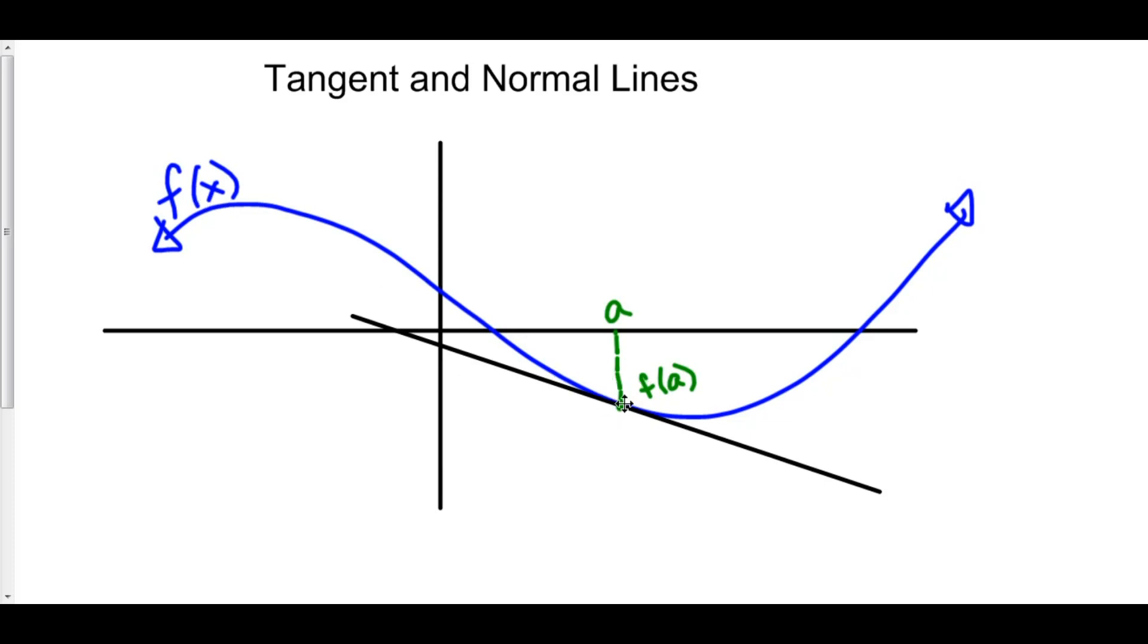The other thing that we need is a slope. Well, how do you find the slope of the tangent line? The slope of the tangent line is given by the derivative of f at x equals a. That is the slope of the tangent line at x equals a.